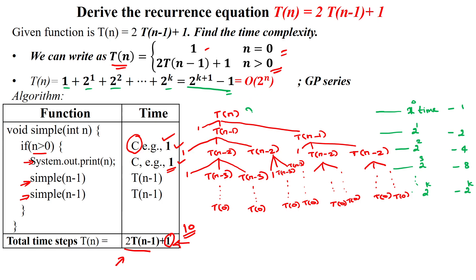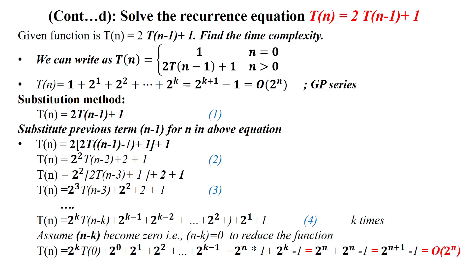Now we are going to solve this using the substitution method. T(n) = 2T(n-1) + 1. The previous term is T(n-1), the next previous term is T(n-2), and so on. In this equation we are going to substitute T(n-1), so we take the entire equation 2T(n-1) and substitute n-1 in place of n.